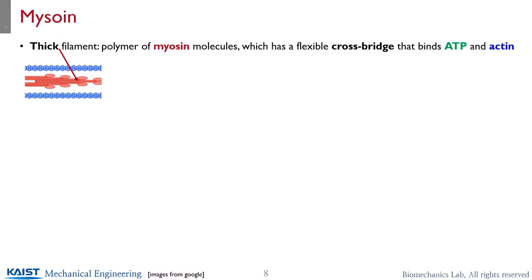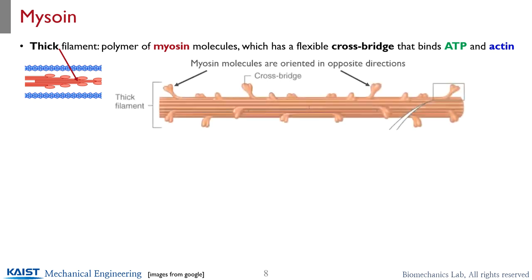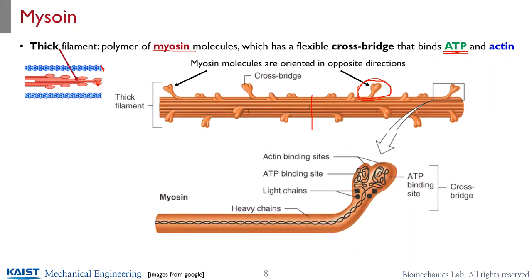Looking more closely at the myosin part — that's a thick filament, a polymer of myosin molecules — it has a cross-bridge, which is the important connection part between the myosin and actin. So the reddish part and the blue part are physically connected by the cross-bridge. It requires energy, so there is a binding site for ATP. With respect to the center, those cross-bridges are oriented in opposite directions, so the overall length shrinks instead of linear translation. There are binding sites for actin to generate length changes, and also another binding site for ATP as an energy source. This is the basic structure of the myosin filament and myosin molecules.